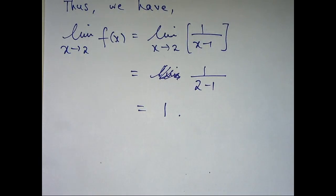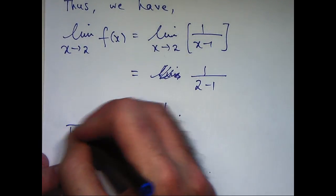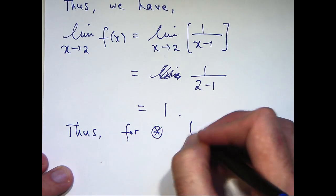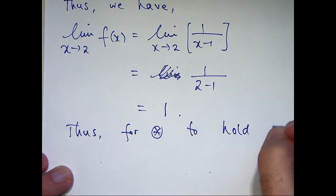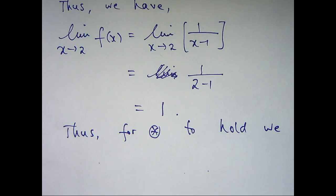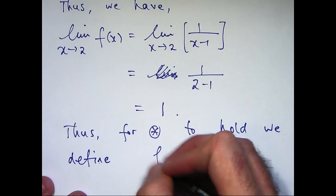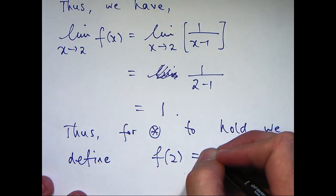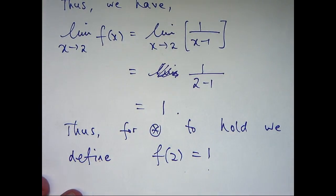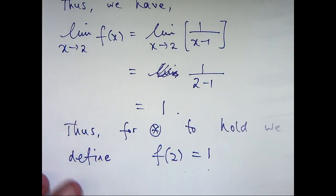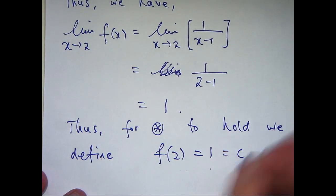So let's write that down. So we're going to define f of 2 to be 1. And we know that f of 2 is just c, so c will equal 1.